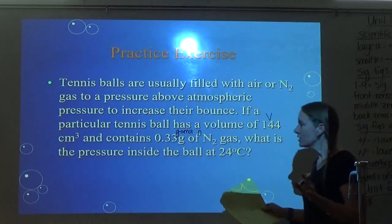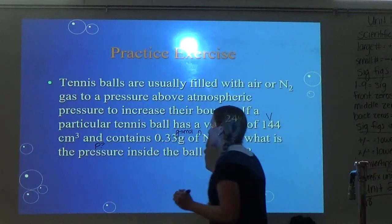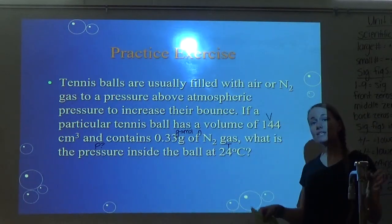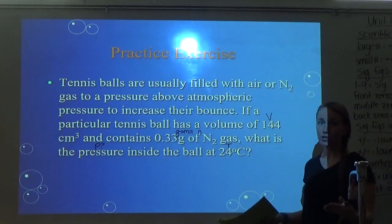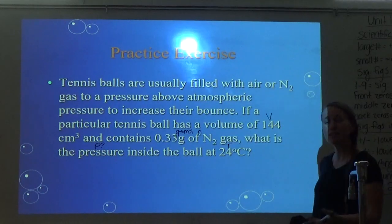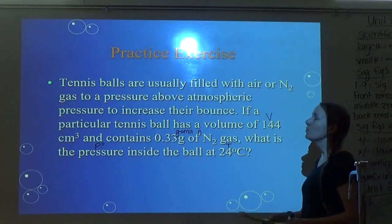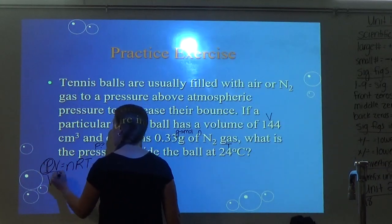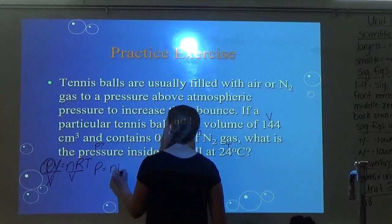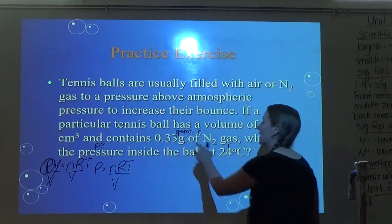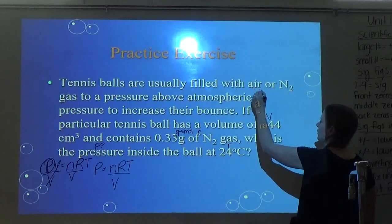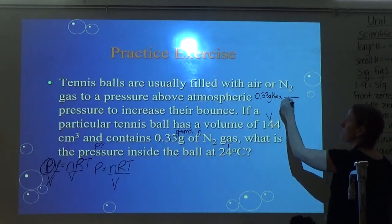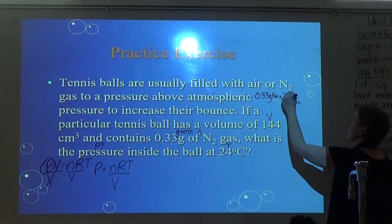I'm solving for P. We use PV equals NRT, rearranged to P equals NRT over V. First, convert grams to moles: 0.33 grams of N2 — nitrogen is N2, so 14 × 2 = 28 grams per mole — gives 0.012 moles. My R value is the ATM one. Temperature: 24°C plus 273 equals 297 Kelvin.